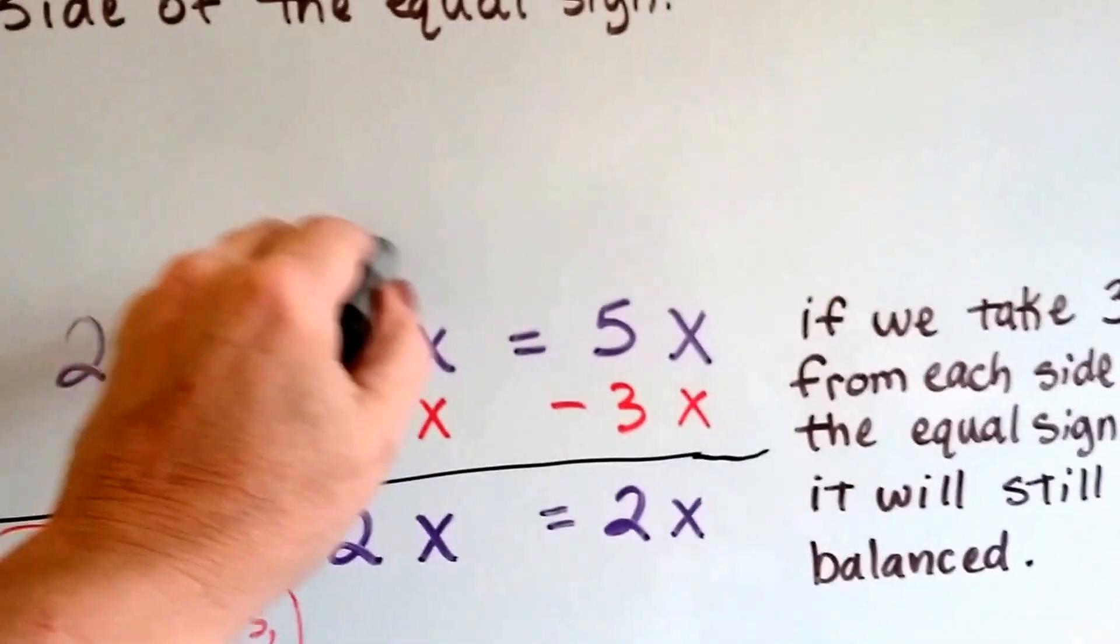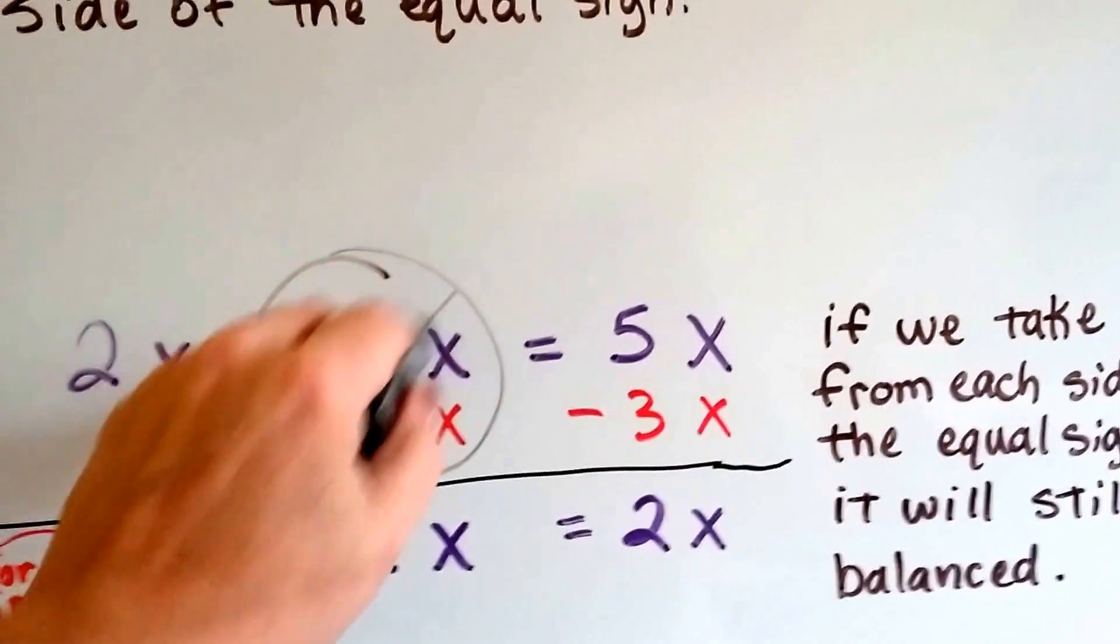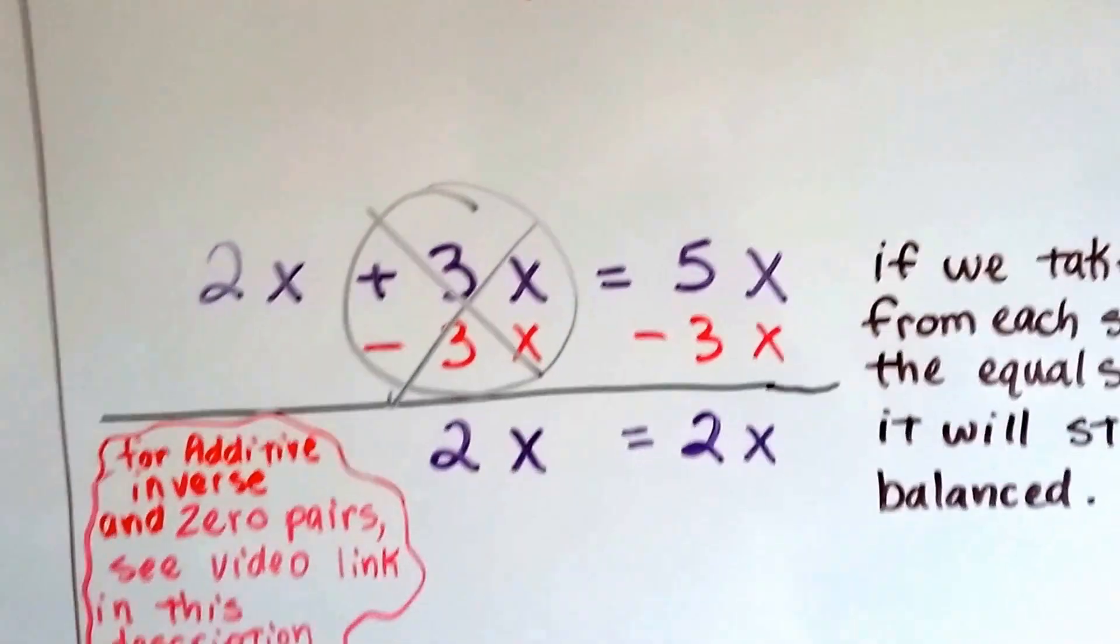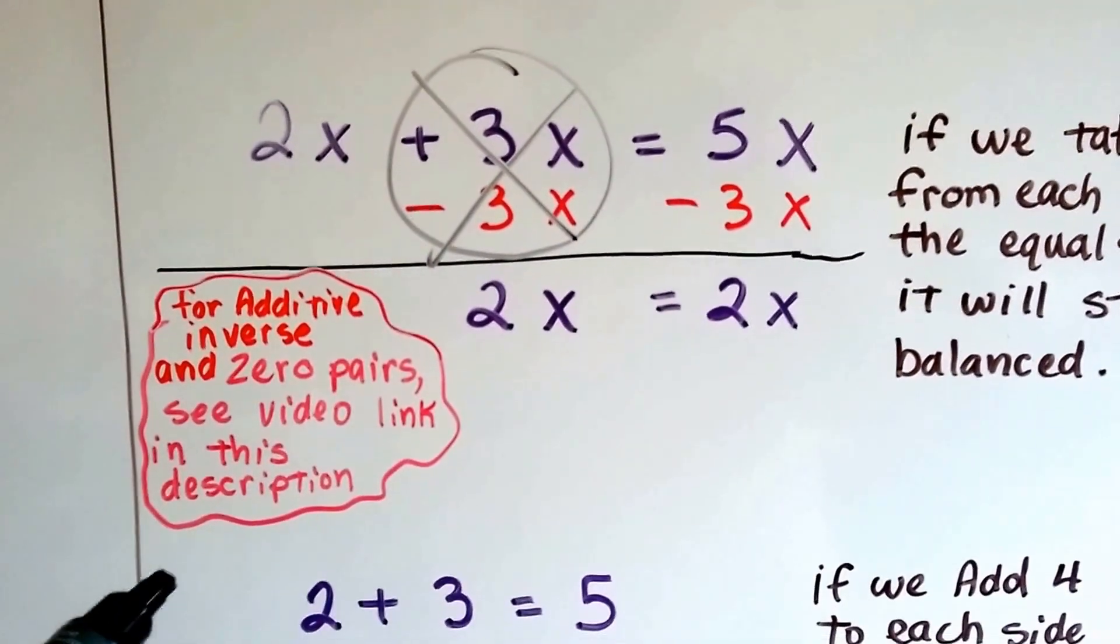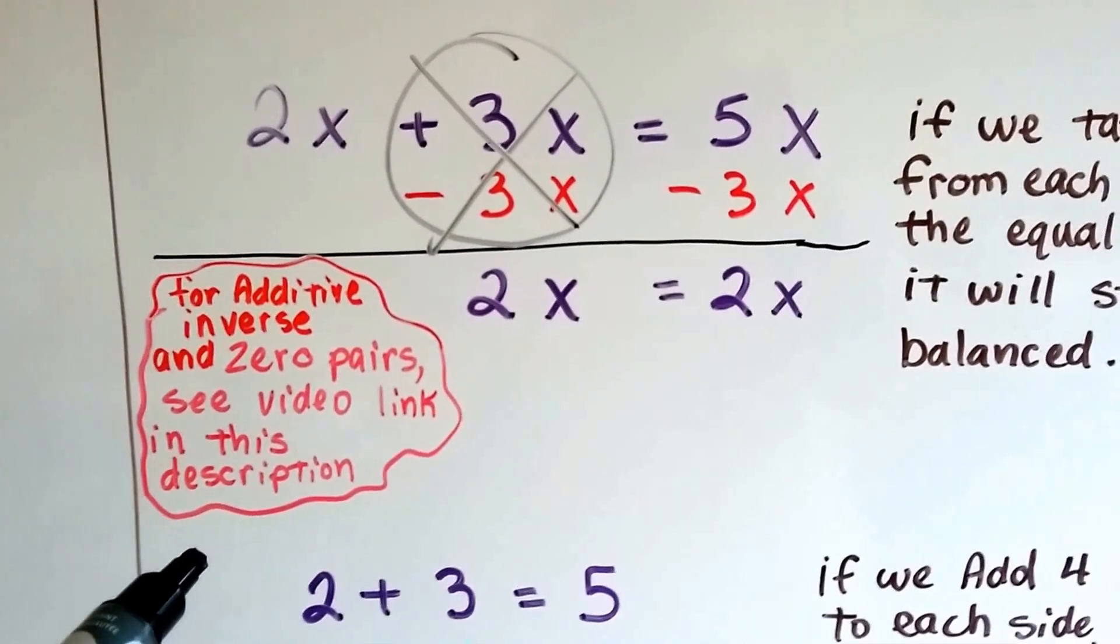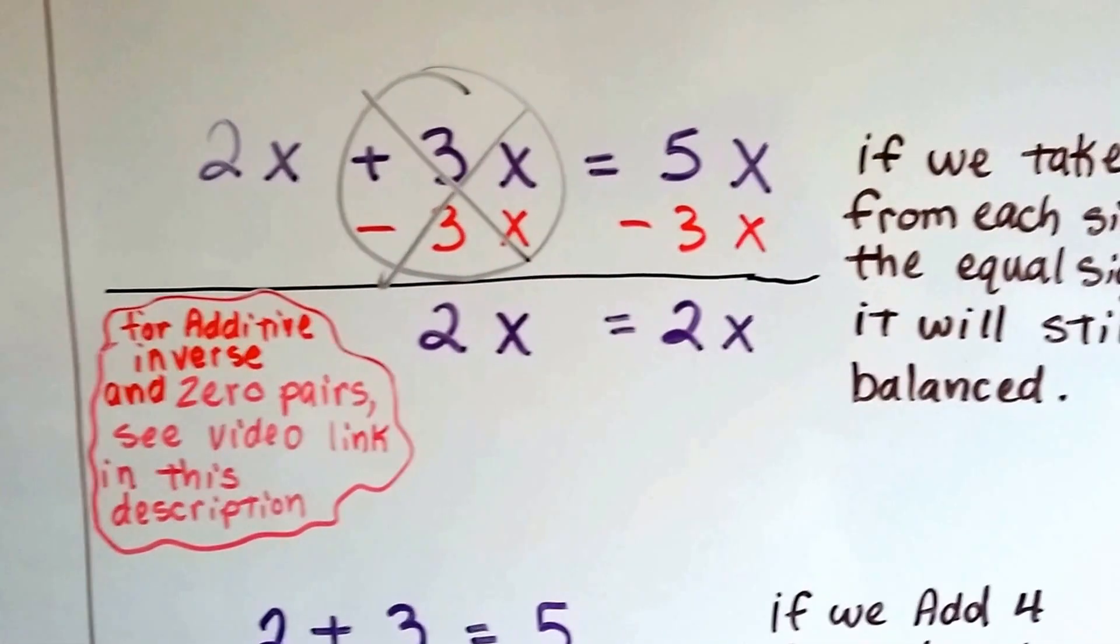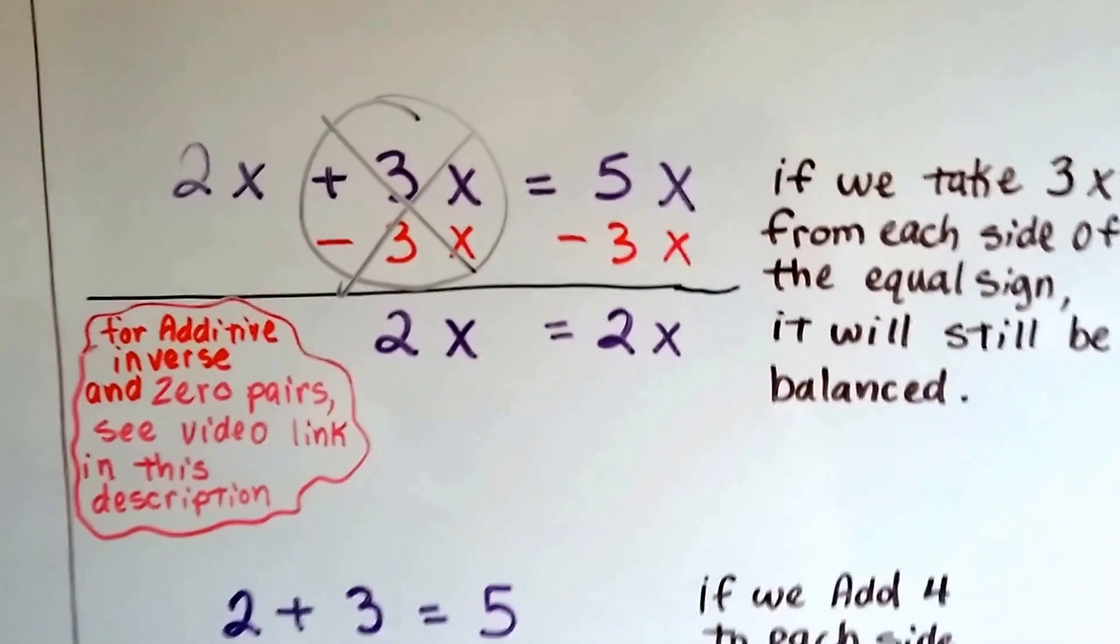Now, this is called additive inverse. This creates a zero pair and it cancels out. And if you don't know about that, you need to see my additive inverse and zero pair video. There's a link in the description. We learned about that before in grade school.